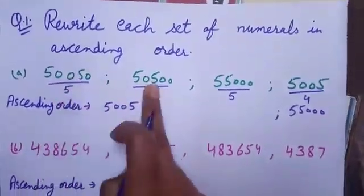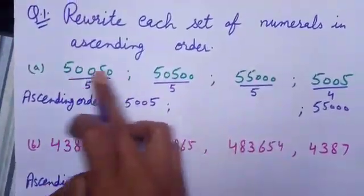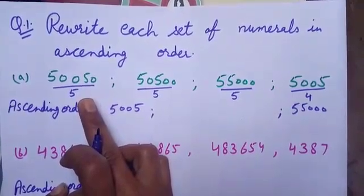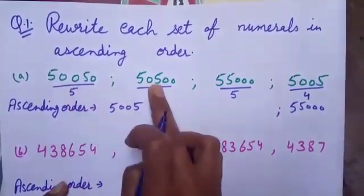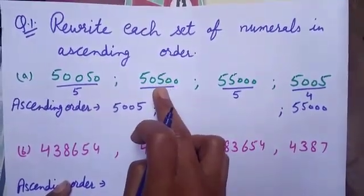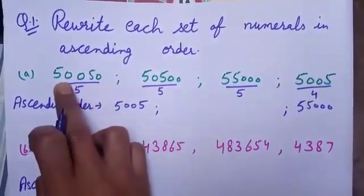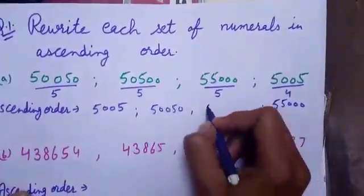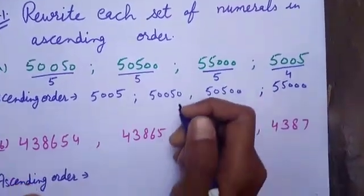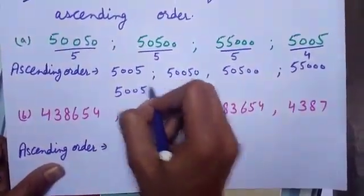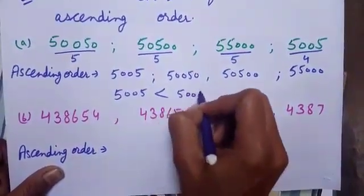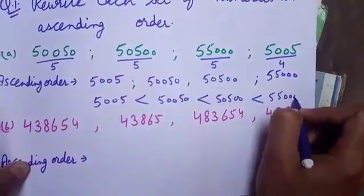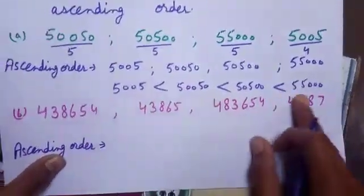Now I want to compare the remaining 2 numerals. The digit at the 1,000 place is the same. Then I will compare the digit which is at the 100 place. Here, 0 is at the 100 place. Here, 5 is at the 100 place. It means this numeral is greater, so I will write this numeral first, then this one. I can also write the ascending order using this symbol. Ascending order means smallest to the greatest.